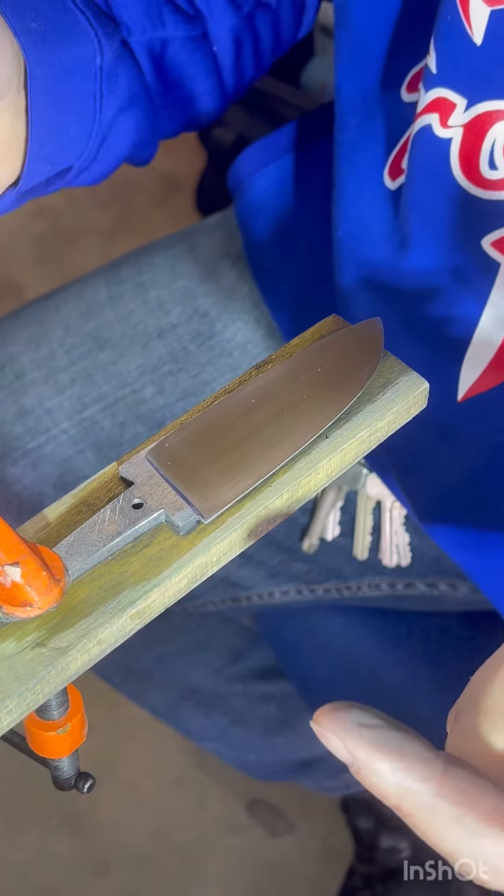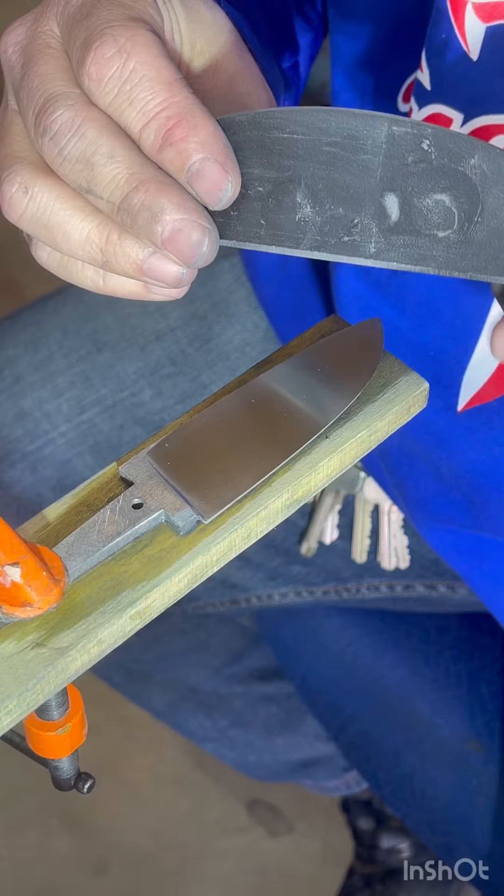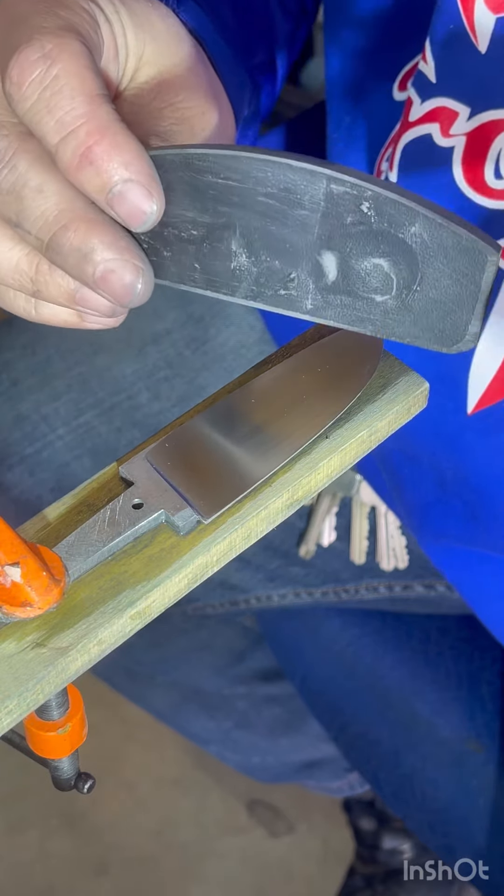And that basically, in a nutshell, is how I go about hand sanding hollow grind bevels. Thanks.